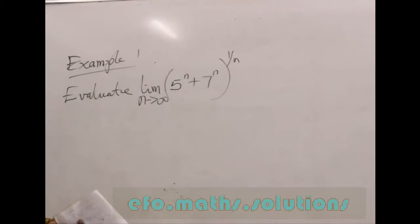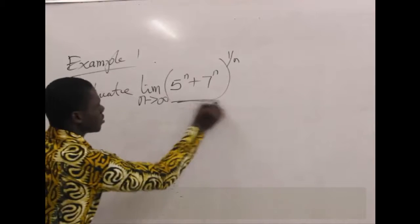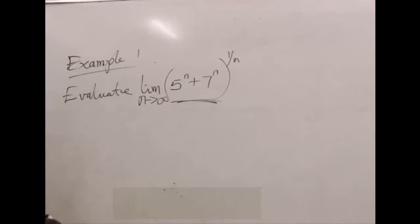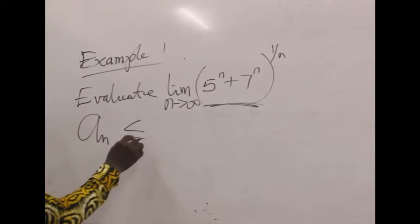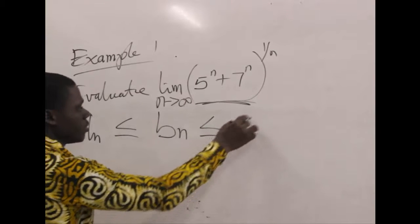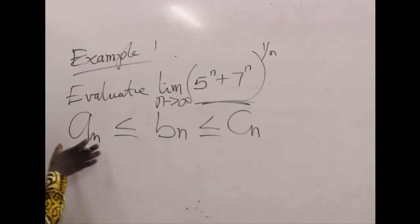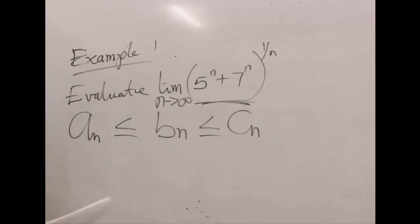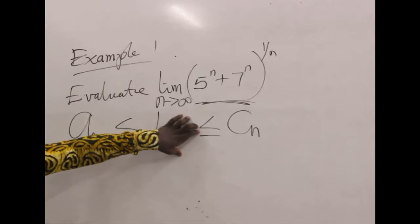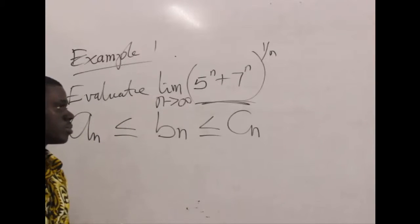We have this as our main sequence. By the sandwich property, we should be able to have a sequence which is less than or equal to another sequence. When we know the limit of the lower sequence and it equals the limit of the upper sequence as n approaches infinity, it presupposes that the limit of the sequence in the middle is also equal to that value.